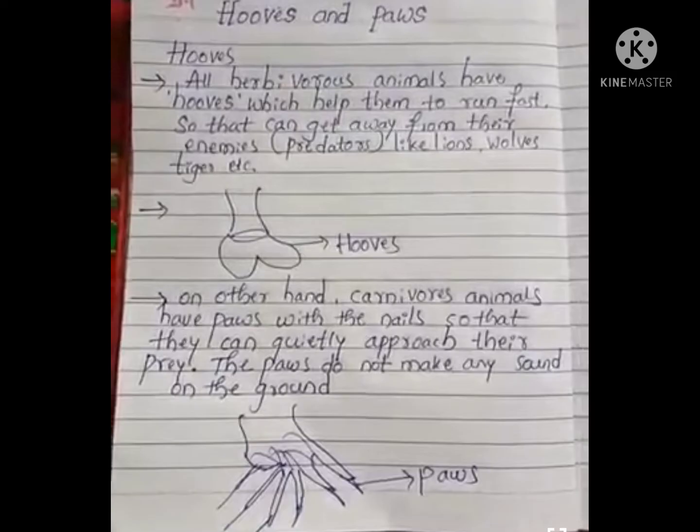Now I am going to explain what are hooves and paws. All herbivorous animals have hooves which help them to run fast so that they can get away from their enemies, like lion, tiger, cat, etc.